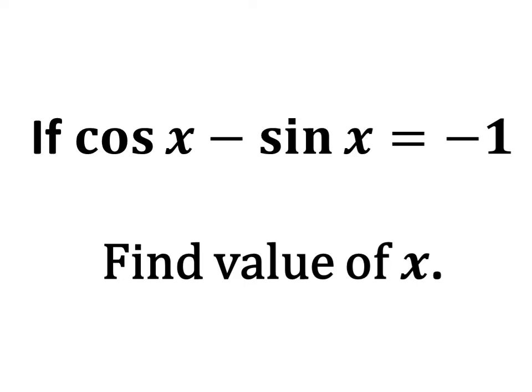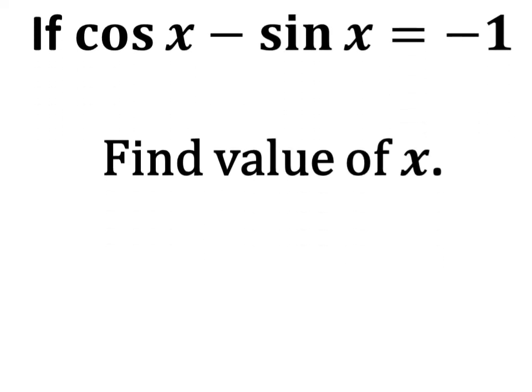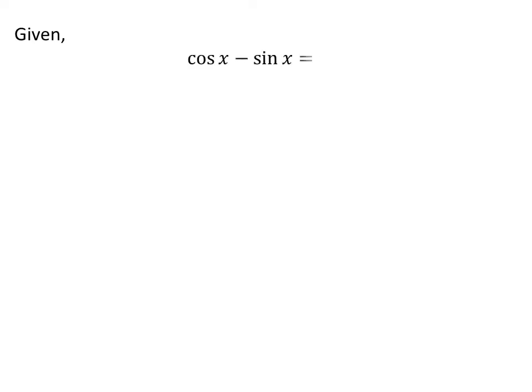In this video, we will learn to find the value of x when cosine of x minus sine of x is equal to minus 1. Given to us: cosine of x minus sine of x is equal to minus 1.